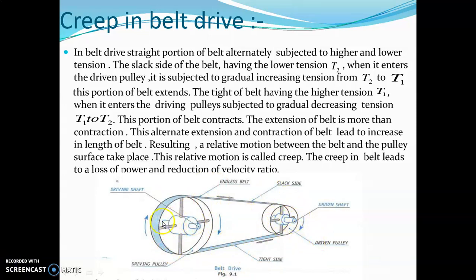On the slack side, tension is lower. When entering the driving pulley, tension increases, causing the belt to extend. On the tight side, when entering the driven pulley, tension decreases from T₁ to T₂, causing the belt to contract. This alternate extension and contraction affects the belt length.